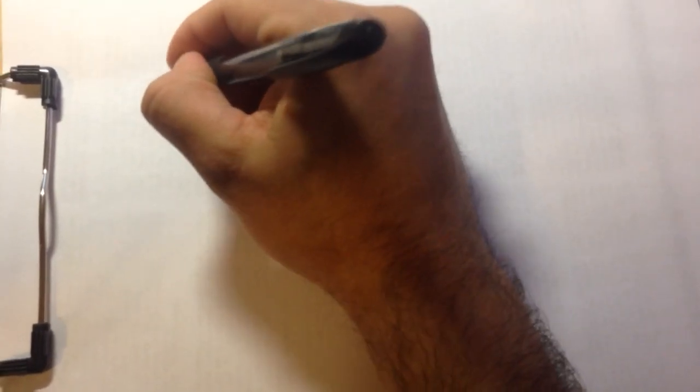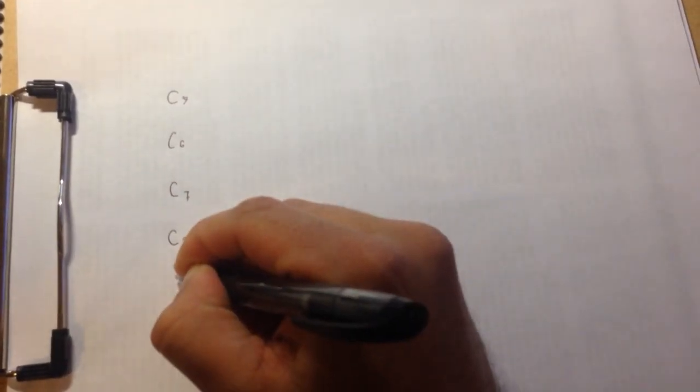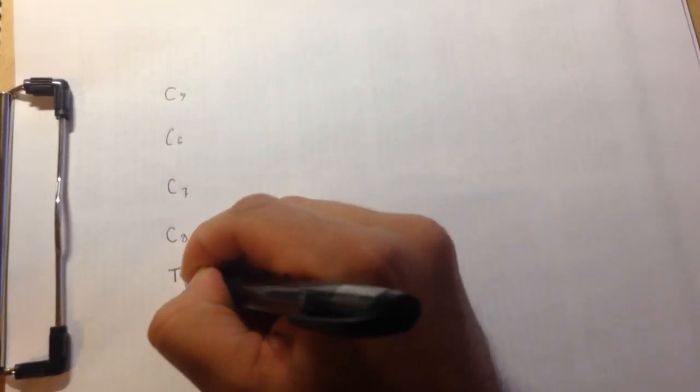So, we know that the brachial plexus goes from the fifth cervical root to the first thoracic root. We're going to start by writing out just that. So, we're going to say C5, C6, C7, C8, and T1.